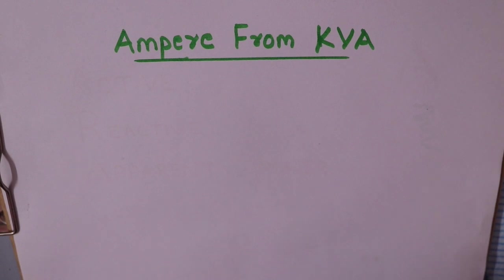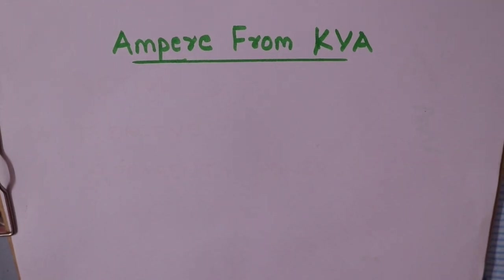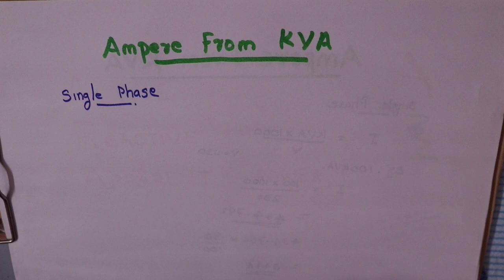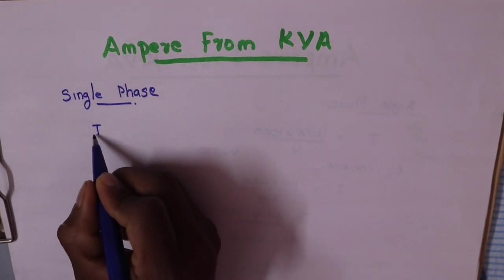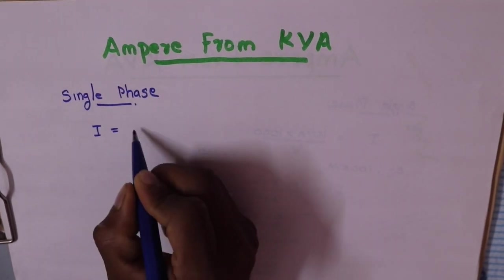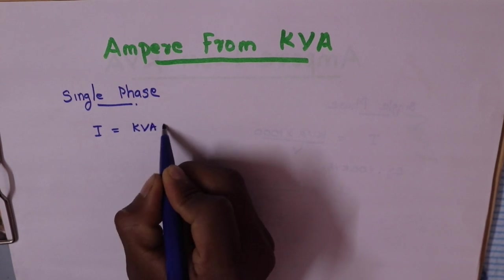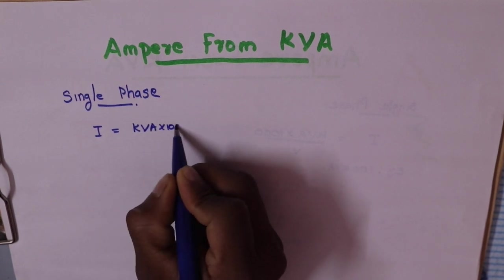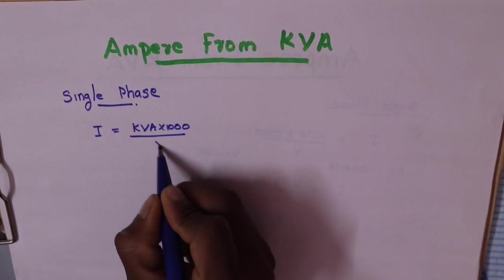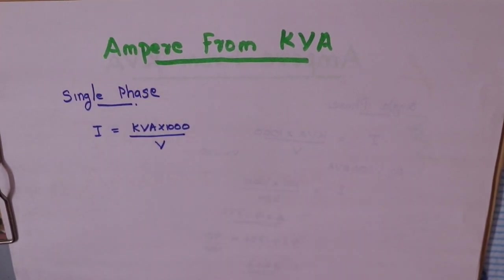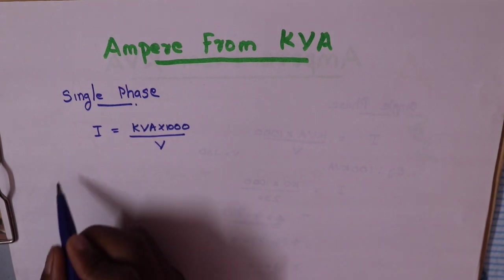For a single-phase generator, the formula is: I is equal to kVA into 1000 divided by voltage. We have an example of this.